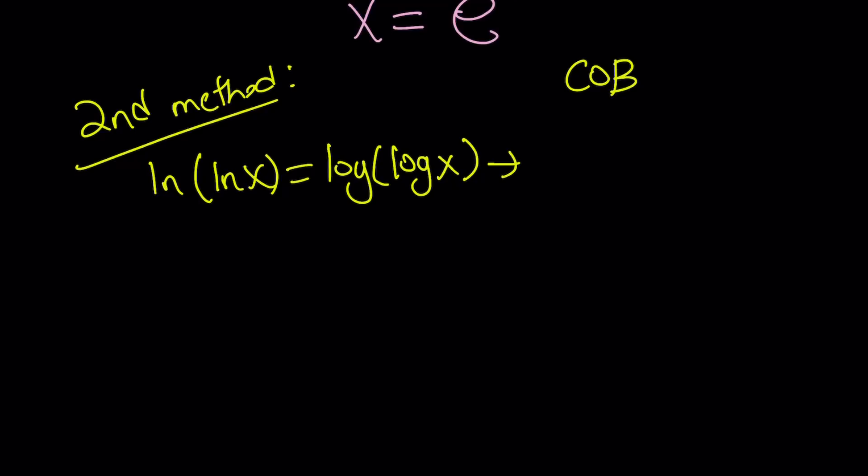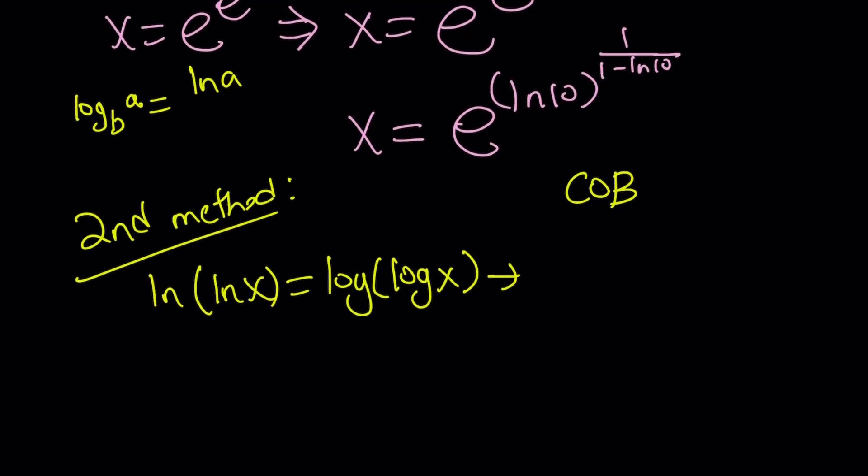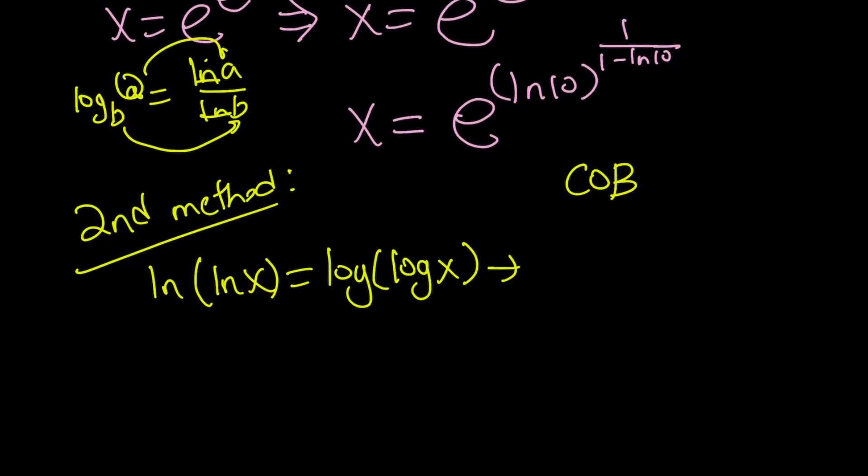So this is how it works. If you have a log like A base B, you can basically write it as, let's say you want to convert it to ln. You can write it as ln A over ln B. So the A goes here and the B goes here and you use the ln twice and you're done. That's pretty much. And obviously ln can be replaced with log or any other logarithm with any base you want.